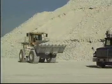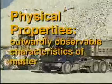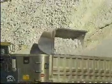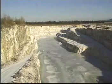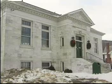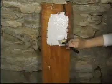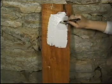Physical properties are the outwardly observable characteristics of matter. You can see, touch, or taste physical properties. Let us see what physical properties we can observe in this piece of rock called marble. Marble is a rock taken from the ground in quarries. It is used in making buildings, household items, and is important in making many products like paint. Marble has many physical properties, some of which we will discuss in a few moments.